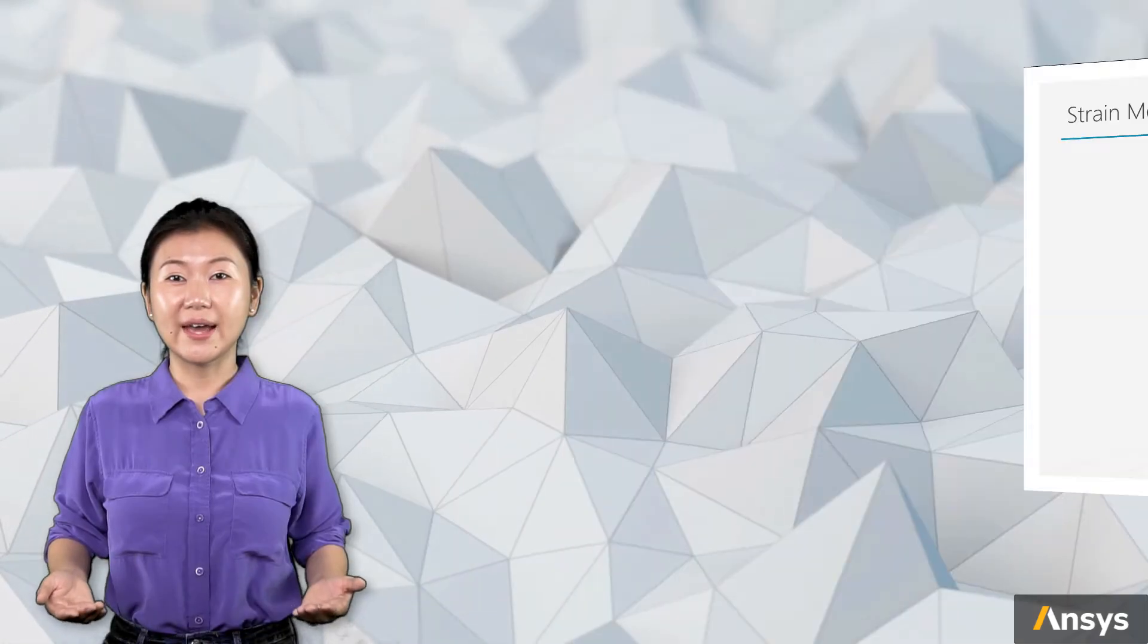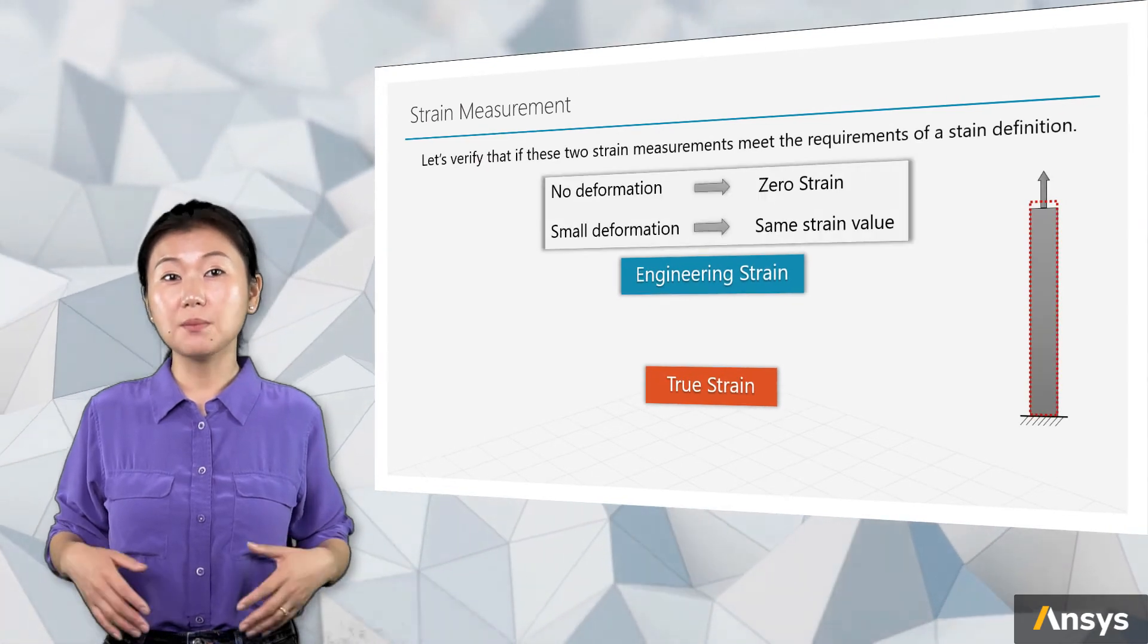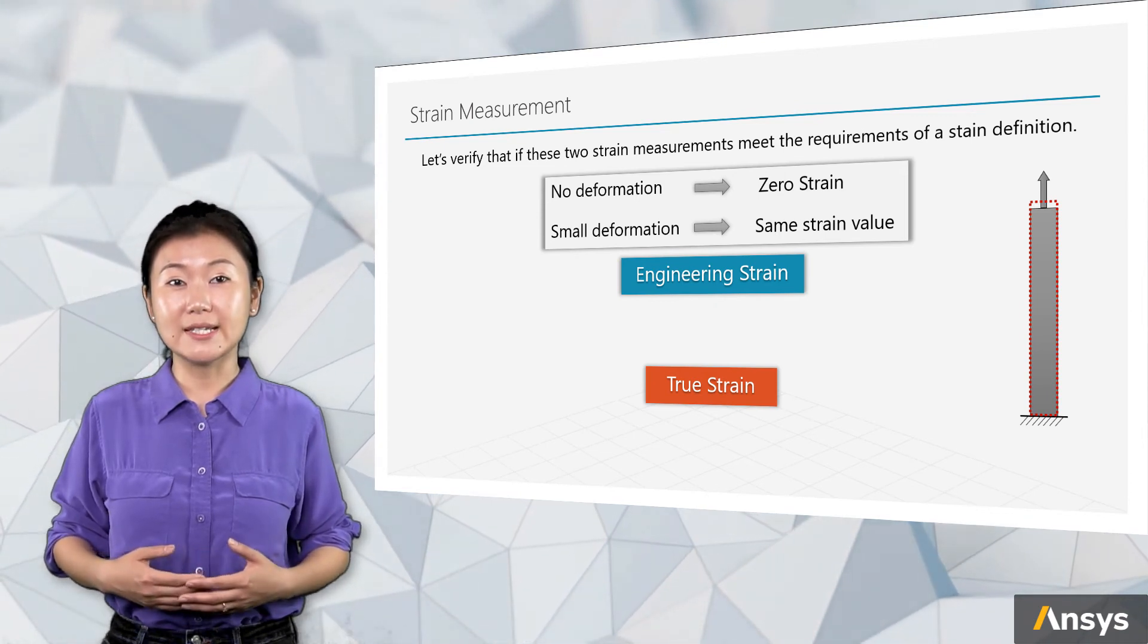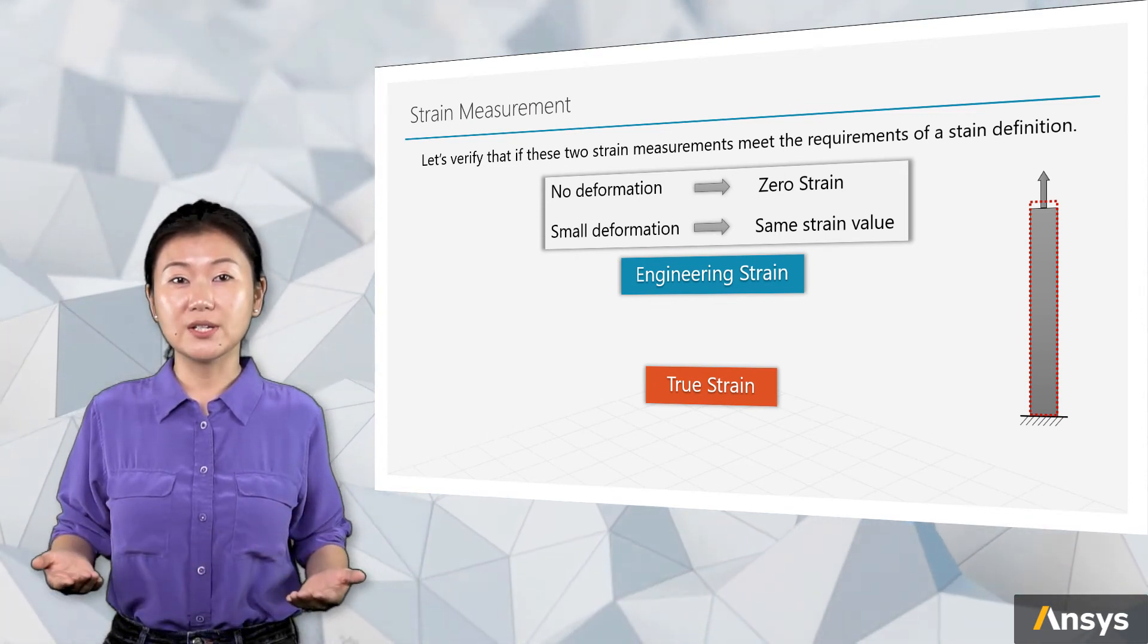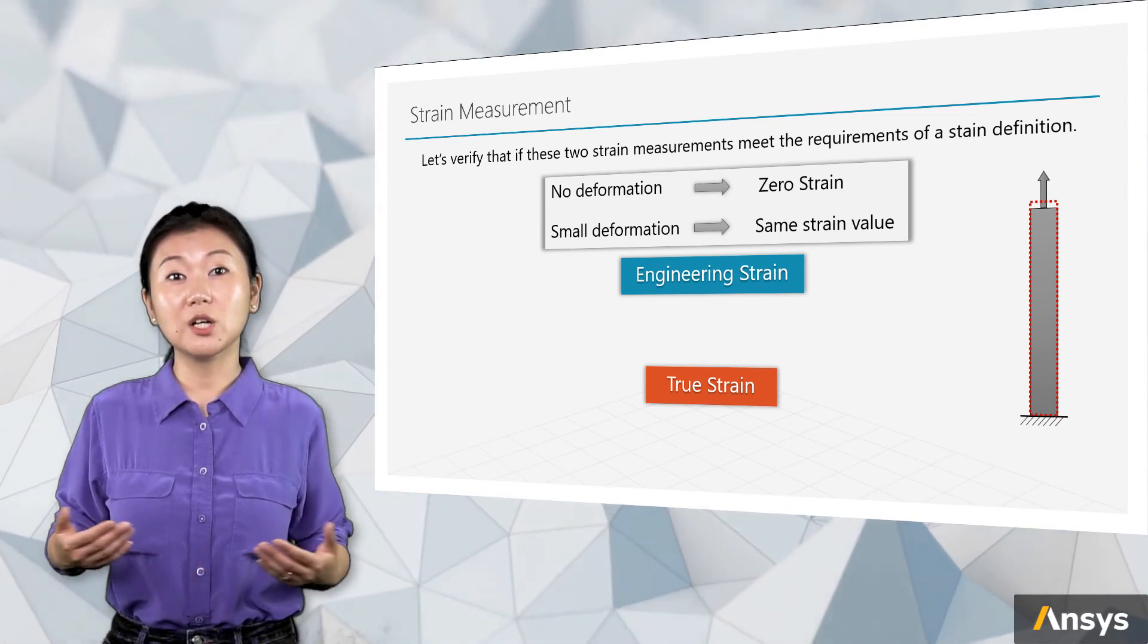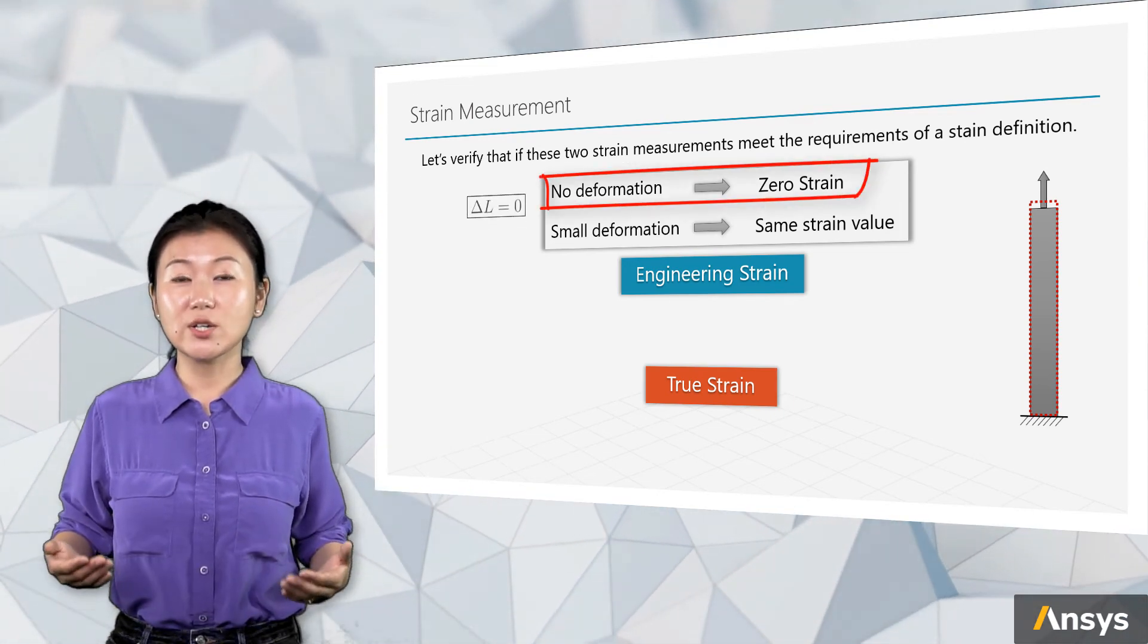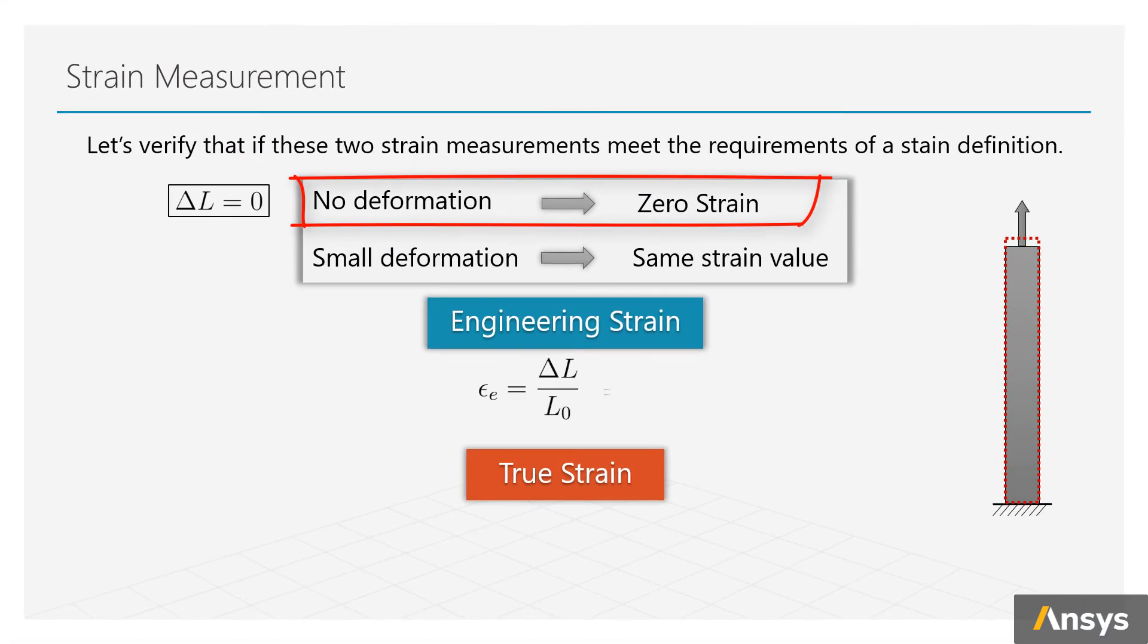Let's verify that if these two strains meet the requirement of a strain definition. That is, when there is no deformation, they should be absolutely zero. And when the deformation is small, they should yield very similar values. So when the change of length delta L equals to zero, we can see that both of the expressions becomes zero.